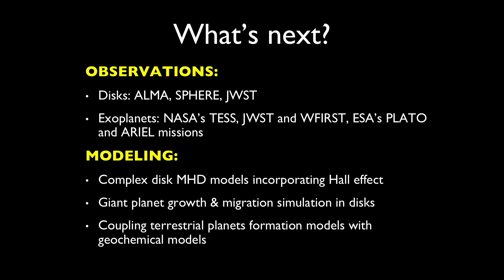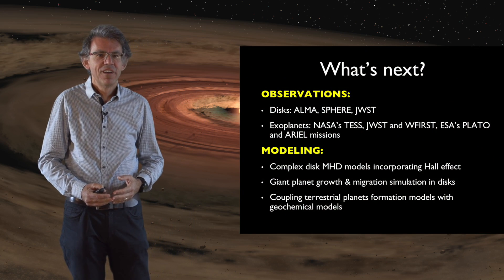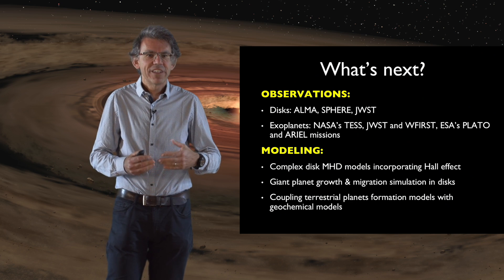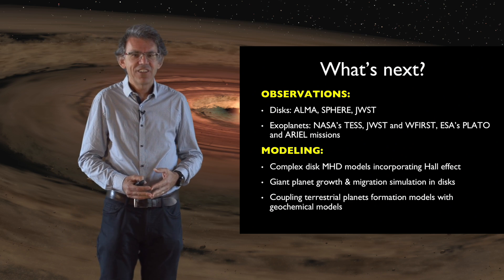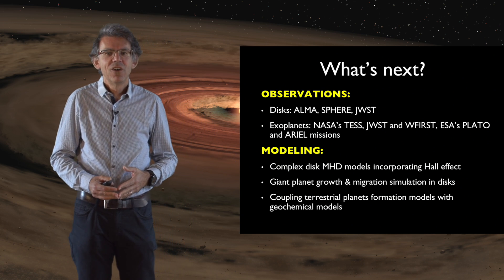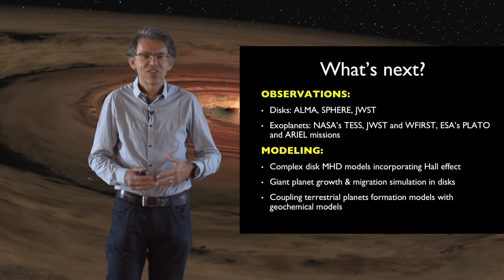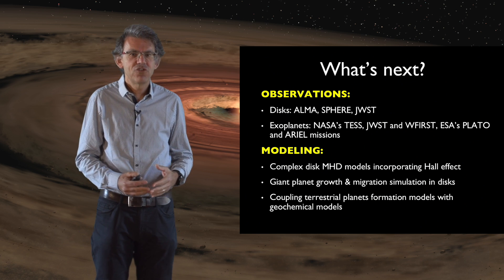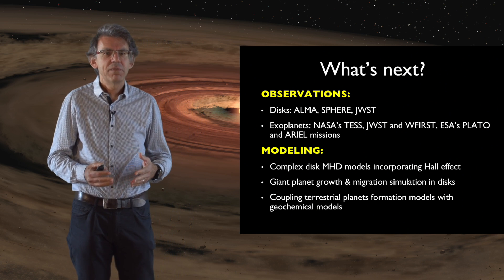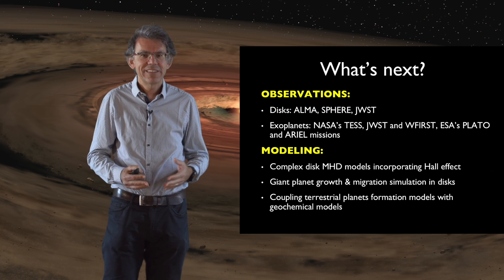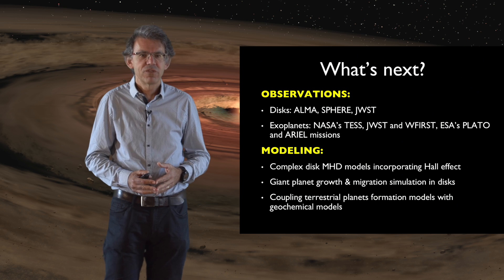So what's next? How can we improve and solve these problems? We need to advance on two sides: observational and modeling. Observations are key — to calibrate models, discriminate between models, and inspire new ones. The future is bright. To understand disks, we have the ALMA radio telescope, which is becoming more powerful. We have SPHERE, an instrument on the VLT which allows imaging of disks, and soon the JWST space telescope, which will also be very effective in observing disks.